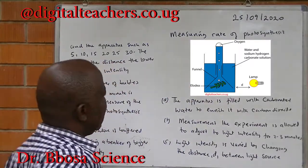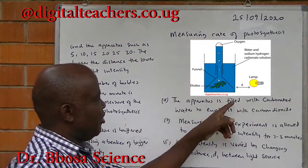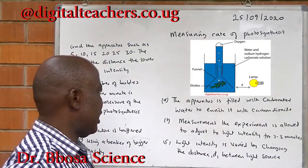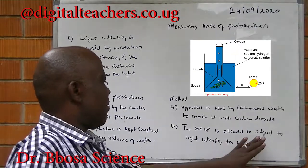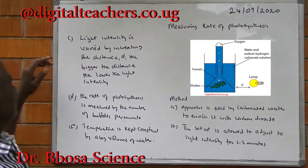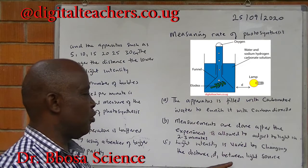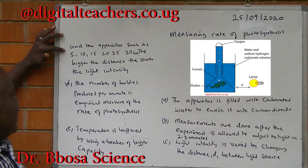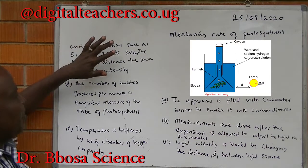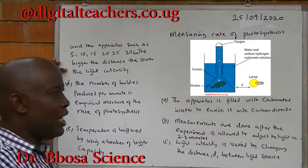Measuring photosynthesis — the apparatus is as shown. The apparatus is filled with carbonated water to enrich it with carbon dioxide. The setup is allowed to adjust light intensity for 2–3 minutes. Light intensity is varied by changing the distance between the light source and apparatus, such as 5, 10, 15, 20, 25, and 30 cm. The bigger the distance, the lower the light intensity.